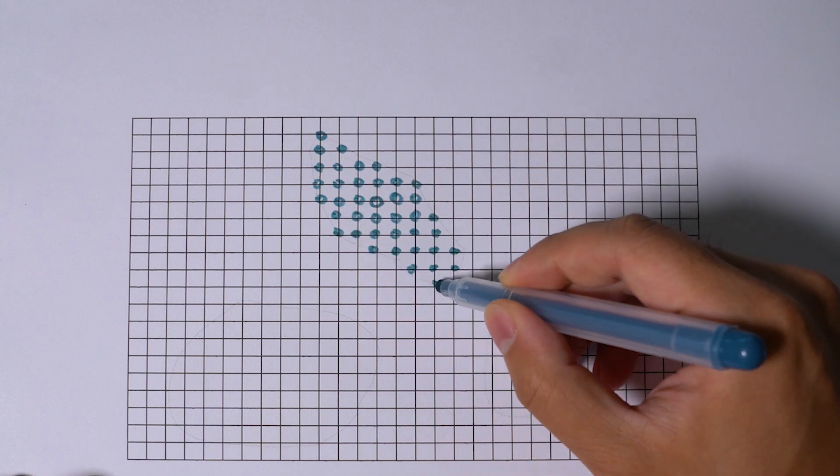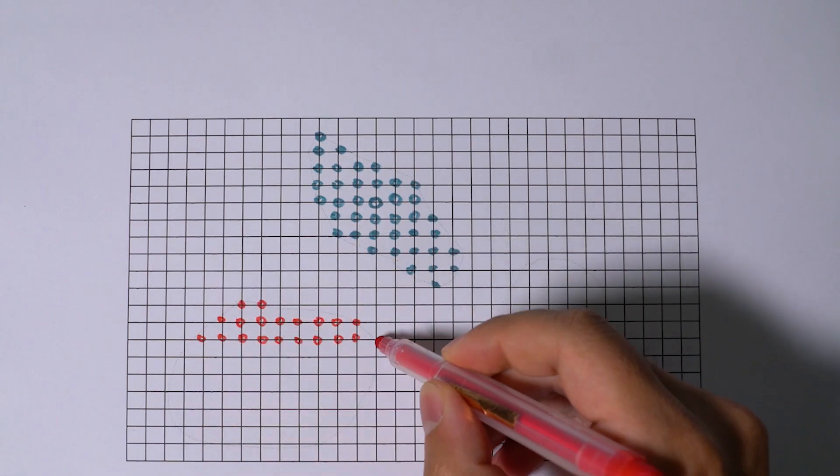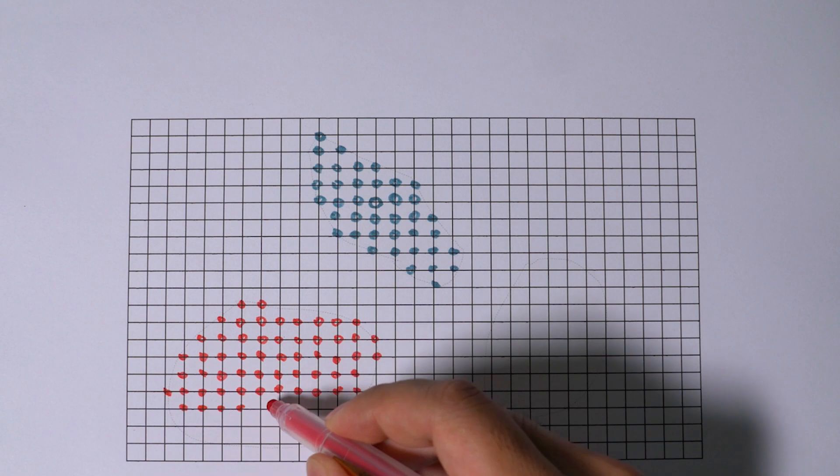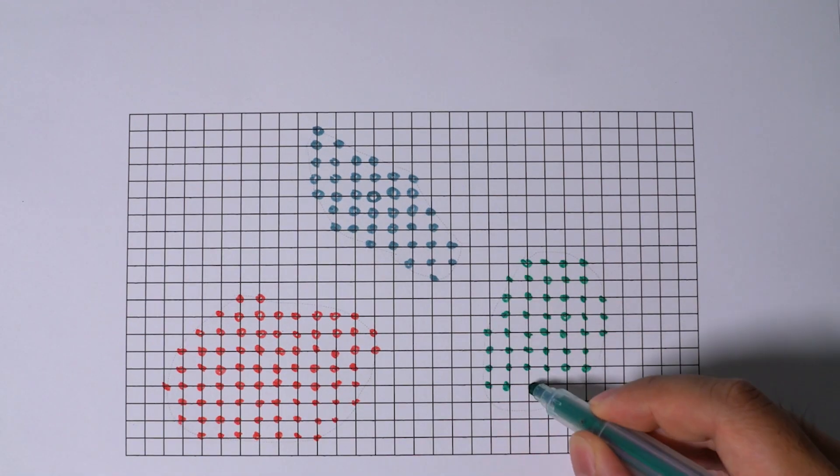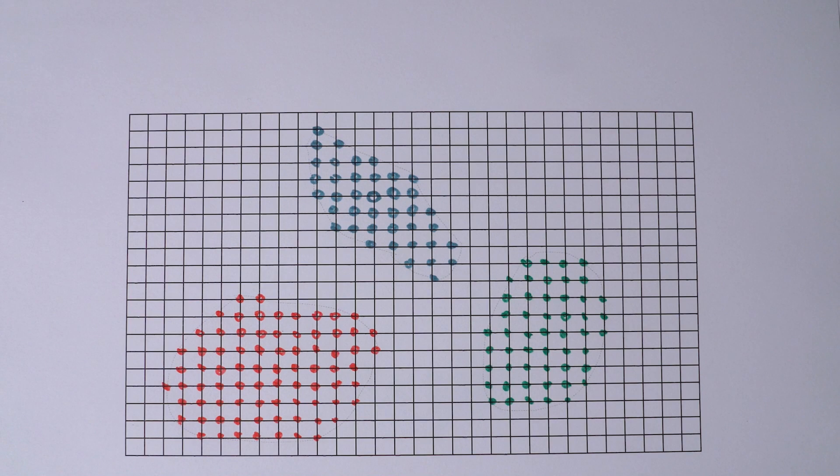This way, we have not only spectra but also spatial coordinates of the measurement points. If we can interpret and visualize the data properly, the missing chemical distribution is found.